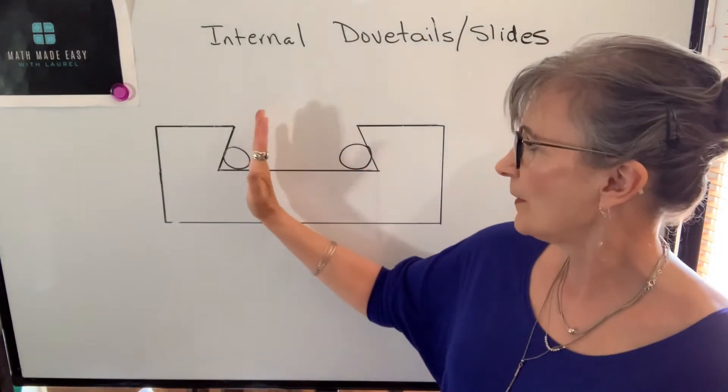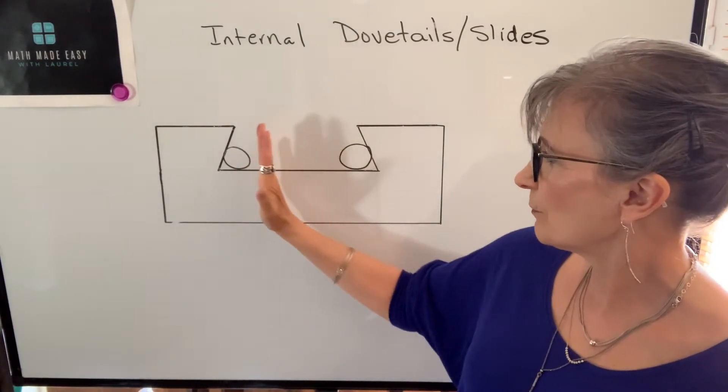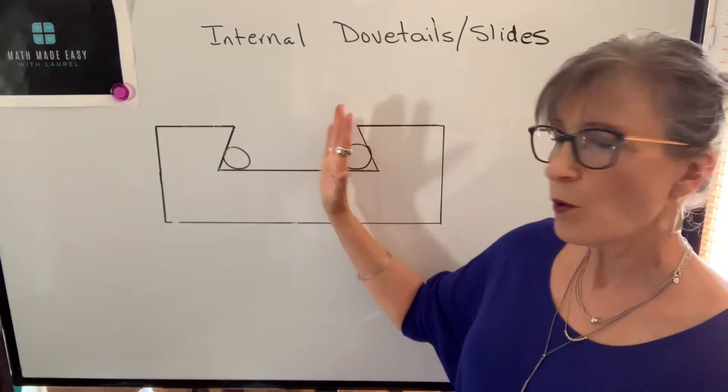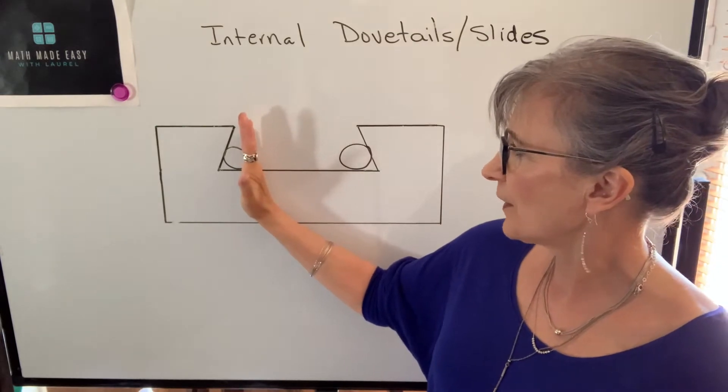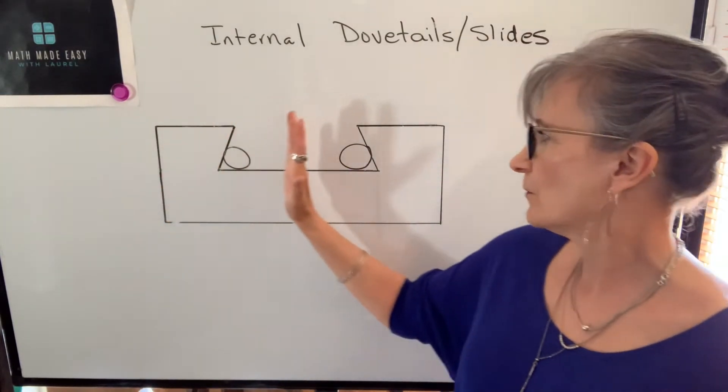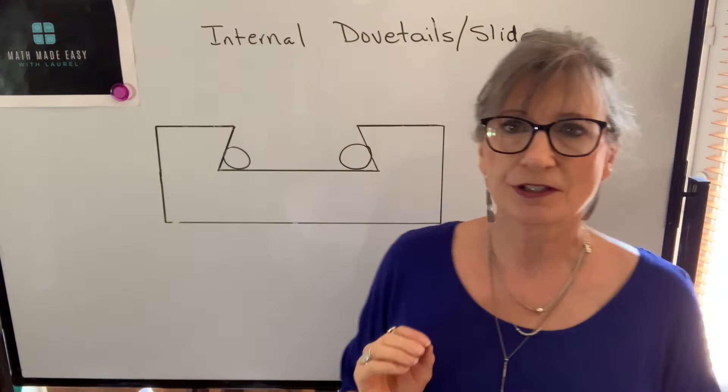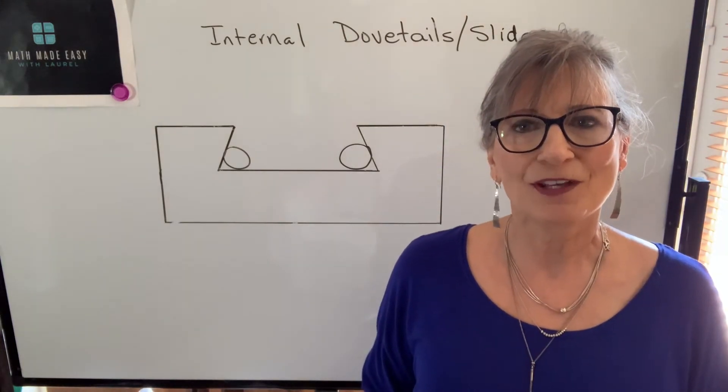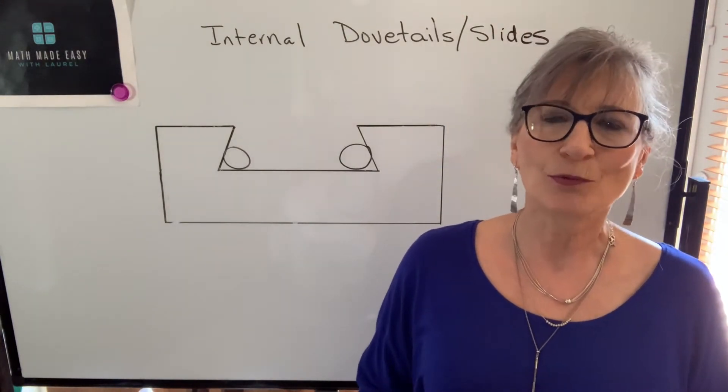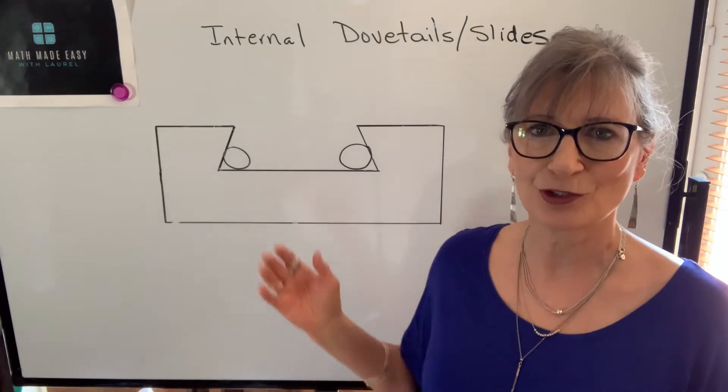so you can either measure the distance between them, or the distance from there to the outside edge, or the distance here to the outside edge. So let's do an example of calculating what those distances should be, so that when you check them you'll know whether your dimensions are correct.